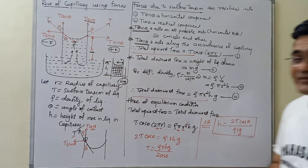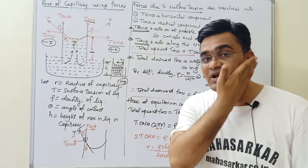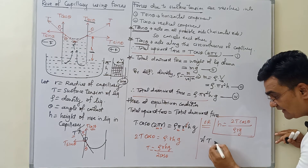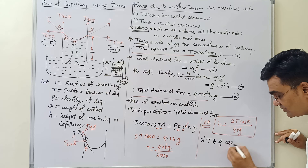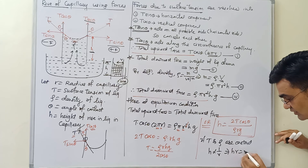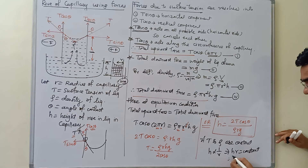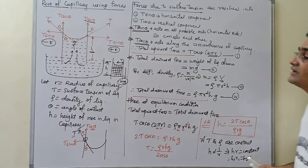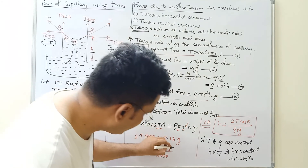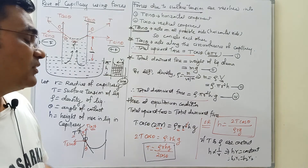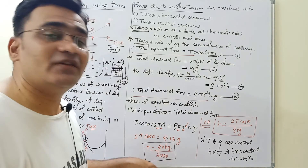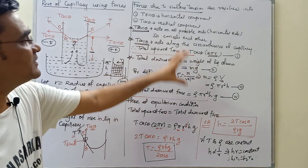Now suppose the liquid is the same but only the capillary radius is changed. Since T and rho are constant, h is inversely proportional to r, meaning h × r is always constant: h₁r₁ = h₂r₂. From this formula you can find surface tension if the height of liquid column is given, or find height if surface tension is given, or even find density. Many quantities can be interchanged using this formula.